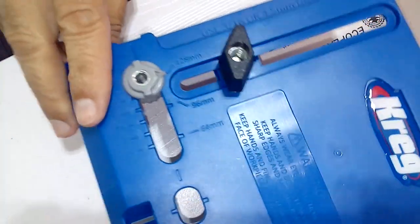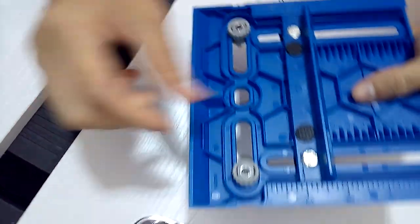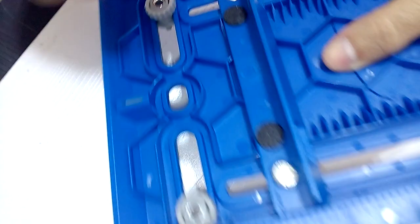To change the position according to the size of our handle we turn the jig and adjust it according to the width of the handle that we are going to install.